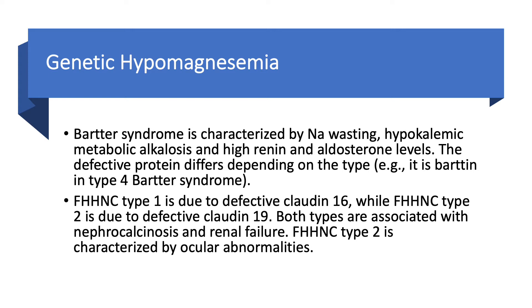Bartter syndrome — we talked about that when we discussed hypokalemia, because it causes hypokalemia and hypomagnesemia. It causes sodium wasting. Therefore, blood pressure is never high in Bartter syndrome; if anything, you can have blood pressure on the low side. You have hypomagnesemia, hypokalemia, and metabolic alkalosis. On a test question, if you have hypokalemia, hypomagnesemia, and metabolic acidosis, think of diarrhea — don't answer Bartter syndrome.